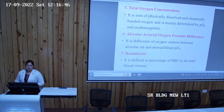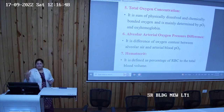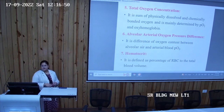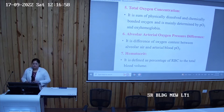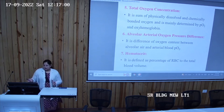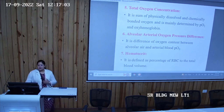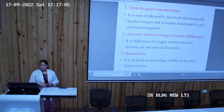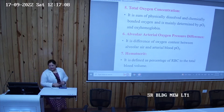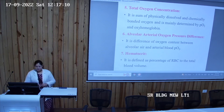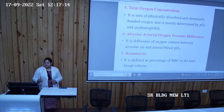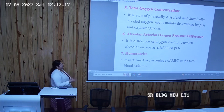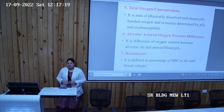Total oxygen concentration refers to both dissolved and chemically bound oxygen combined. The alveolar-arterial oxygen pressure difference represents the difference between alveolar oxygen level and arterial oxygen level. Hematocrit refers to how much of the total blood volume is composed of red blood cells.